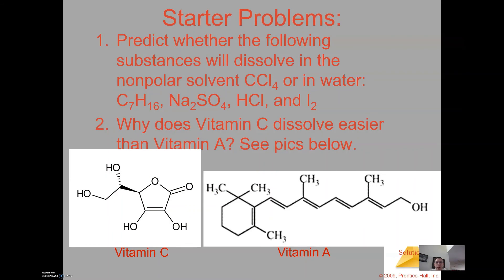All right, so there's a couple examples. We did look at these two with the vitamin C and vitamin A earlier. Question one says predict whether the following substances will dissolve into carbon tetrachloride which is nonpolar or into water. C7H16 is a long carbon chain - if you ever draw that out you'd have seven carbons and all the hydrogens dispersed around it. C7H16 would be a nonpolar substance so which one do you think it would dissolve into?